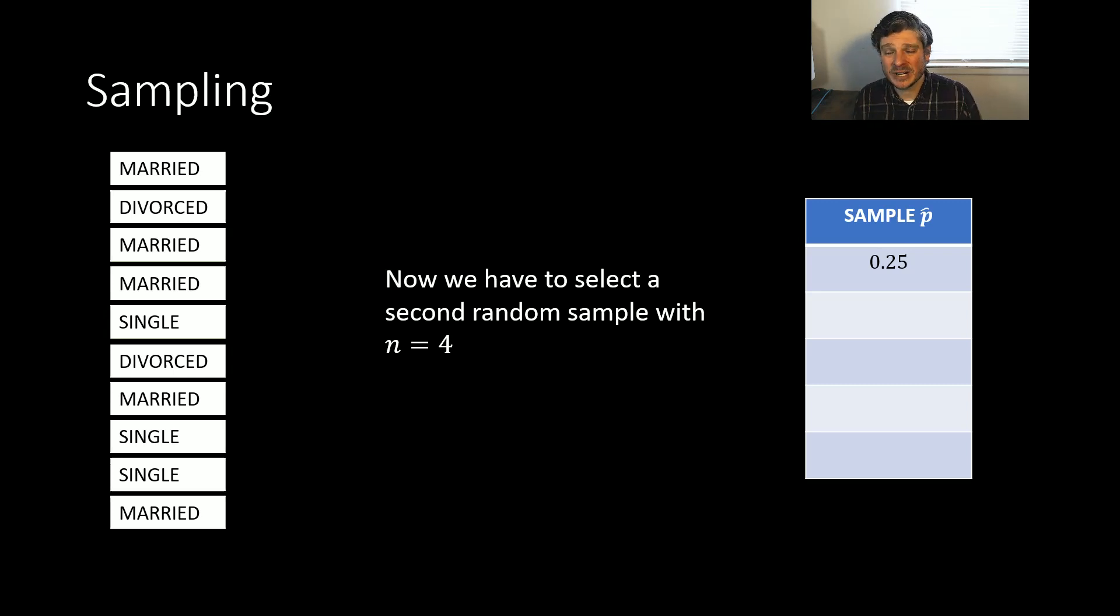But now, I have to select a second random sample. And we need to keep our sample size the same size. So I still need N being equal to four. And I want to choose four more randomly from this list. There we go. In this case, I have married, married, single, single. So now I have two out of four, or a proportion of 0.5. I need to record that in my table as well. And so that gives me my sample proportion for sample number two.